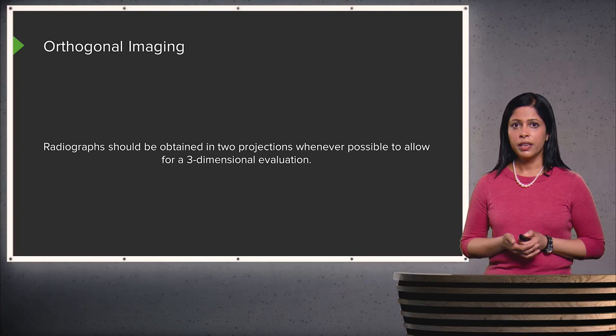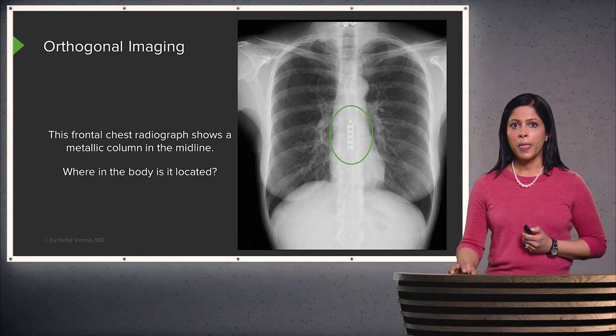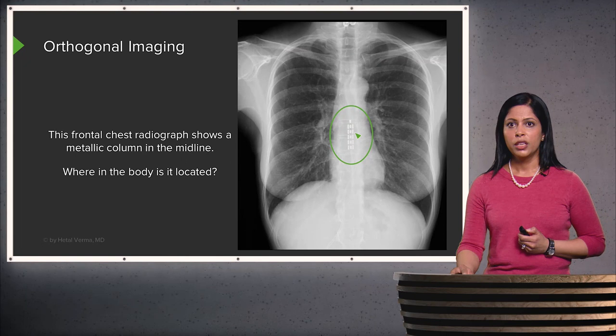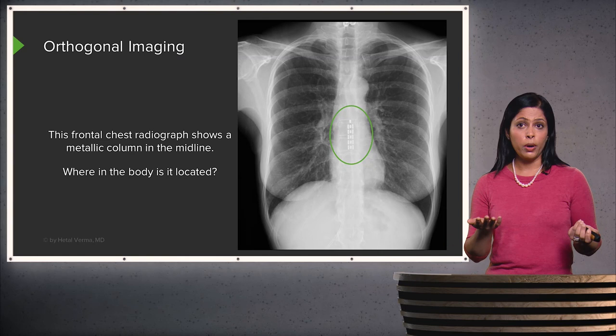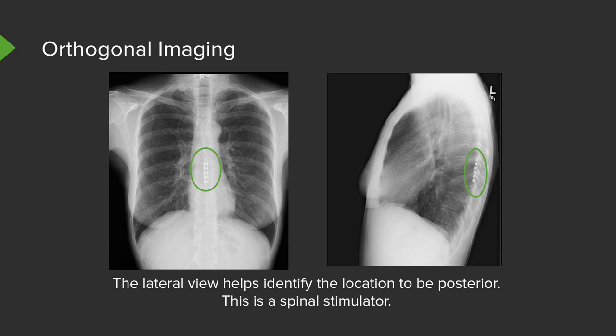Here we see what appears to be a metallic column within the midline of the chest on this single 2D frontal view. Where in the body is this located — anterior or posterior to the heart? It's actually impossible to say based on this single 2D image. What we need is a lateral image to show us the exact position. These two images together tell us that this object is located posteriorly — it's actually a spinal stimulator. It's very important to do at least two different views whenever possible.